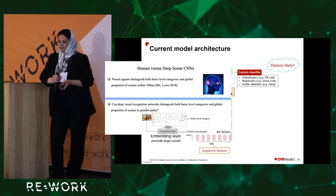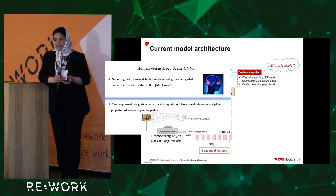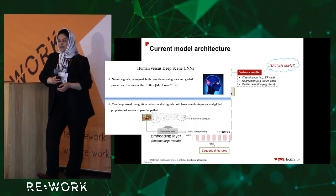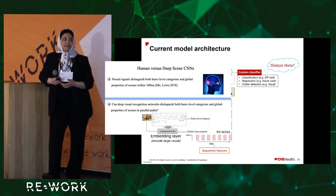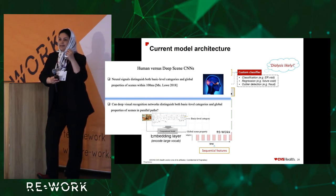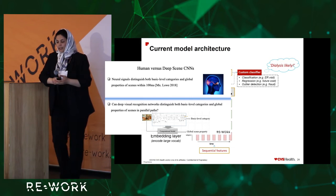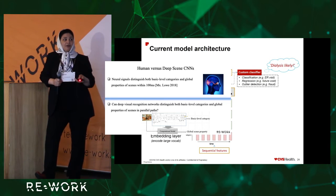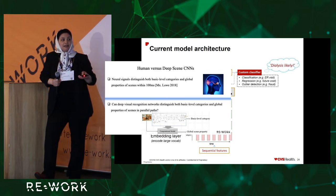Considering the concept of global properties, we know that neural signals distinguish both basic level categorization and global properties of a scene within 100 milliseconds. It is amazing that we can get the gist of a scene in just a blink of an eye. The question is: can deep learning networks also have both basic level categorization and global properties in a parallel pathway?